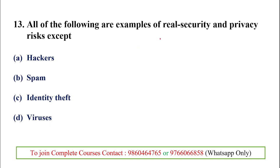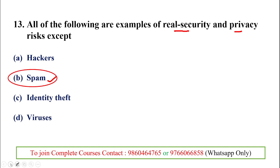Next question: all of the following are examples of real security and privacy risk except — in this question there is an odd one out, the one that does not create a real security or privacy risk. That is spam. Spam is the answer because spam does not make any security problems; it only causes a person to receive lots of emails at one time, which is why it is also called junk email — unwanted emails or messages.